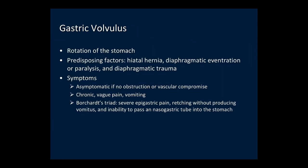Volvulus is rotation of the stomach. The predisposing factor is abnormal gastric anatomy; most patients with gastric volvulus have a hiatal hernia. Volvulus can be asymptomatic if there is no obstruction or vascular compromise, or some patients present with chronic vague pain and vomiting. If there is complete obstruction, patients may present with Borchardt's triad: severe epigastric pain, retching without producing vomitus, and inability to pass a nasogastric tube into the stomach.